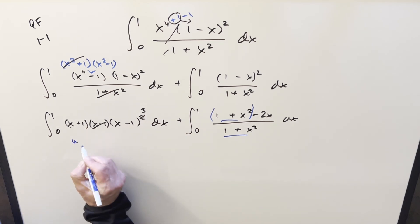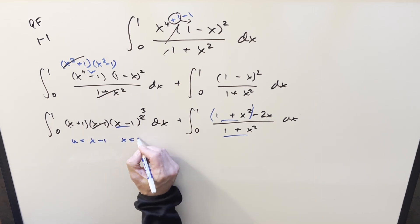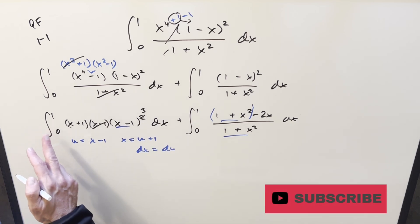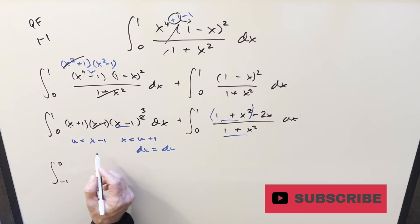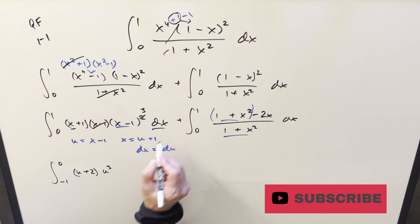So we'll have u equal to x minus one x equals u plus one dx equals du. So we'll go ahead with the substitution first updating the bounds we plug a one in we get zero we plug a zero and we get minus one. Plugging u plus one in here this is going to become u plus two this simplifies to u cubed and then this is just du.